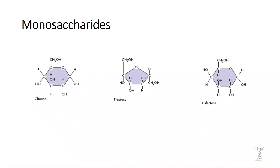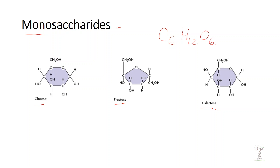First we will start by looking at our monosaccharides. Mono meaning one, and saccharide means sweet. We have three different monosaccharides: glucose, fructose, and galactose. The chemical formula for all of these is C6H12O6 because they all have six carbons, 12 hydrogens, and six oxygens. The only difference is where they are located.